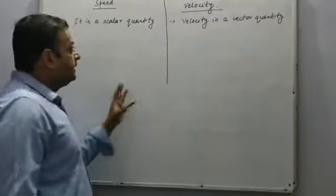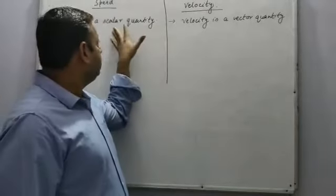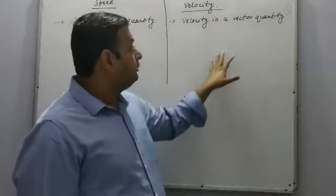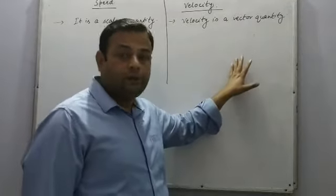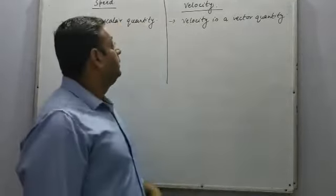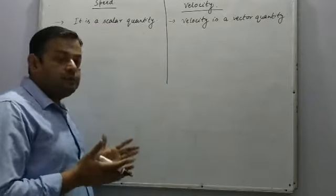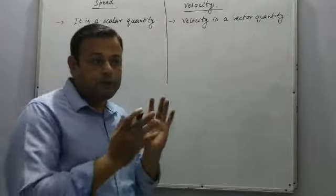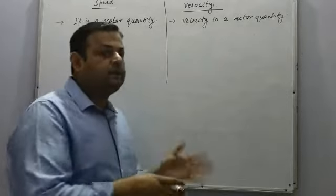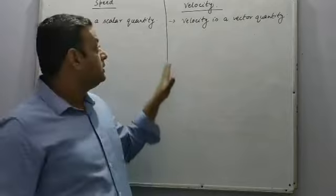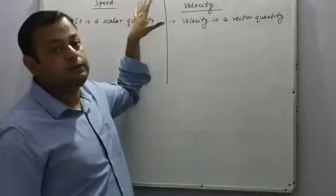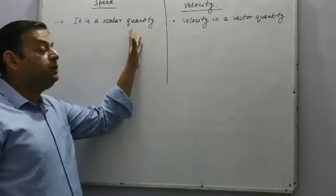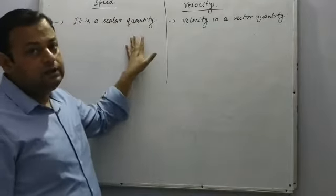Now, what are scalar and vector quantities? Scalar quantities only have magnitude, whereas vector quantities have both magnitude as well as direction. For example, a car is moving on the road at a speed of 54 kilometers per hour, not mentioning in which direction the car is moving. Such quantities which do not have any particular direction but only have magnitude are called scalar quantities.